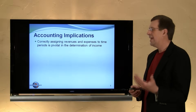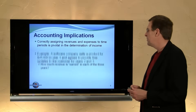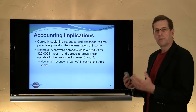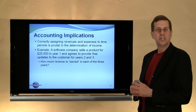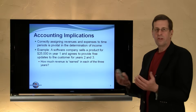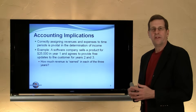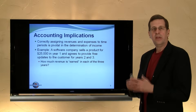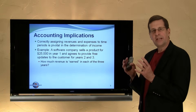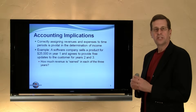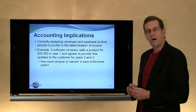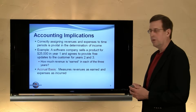If we think about dividing revenues and expenses into these measurement intervals, the challenge becomes clear. Consider a software company that perhaps sells a product for $25,000 in year one but agrees to provide free updates and service for years two and three. The question is simply how much revenue is attributable to year one, how much to year two, and how much to year three. That's quite a challenge when there's no clear definite allocation called for. Accountants have a number of models, rules, and methods to deal with these and many other situations.